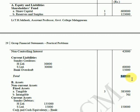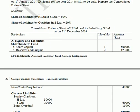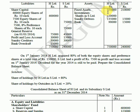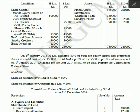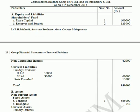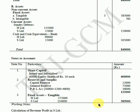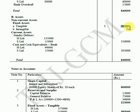On the assets side, non-current assets include fixed assets - tangible assets. HLM fixed assets Rs.3,75,000 and SLM Rs.2,10,000. HLM Rs.30,000 added to SLM gives a total of Rs.5,85,000 for fixed assets. There is also one intangible asset item for one company.